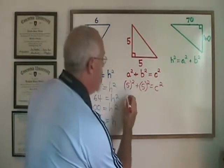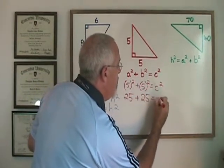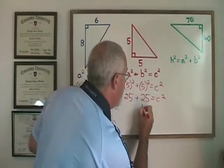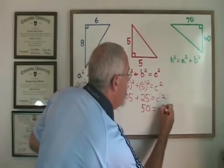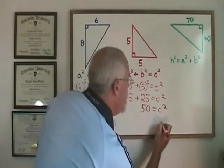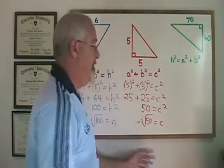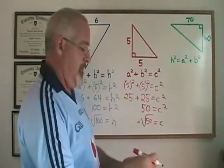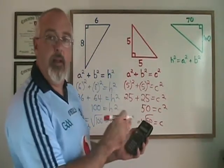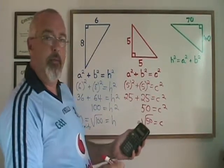Five squared is equal to 25. So I have 25 + 25 = c². 25 + 25 is 50. We have 50 = c². c is therefore equal to the square root of 50, and the square root of 50 is 7.07 and the decimal keeps on going. I will round off to the nearest hundredth, 7.07.